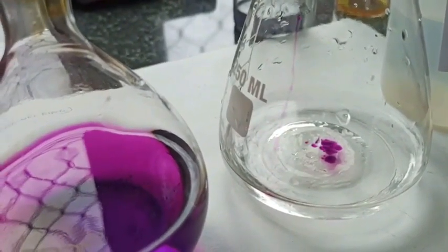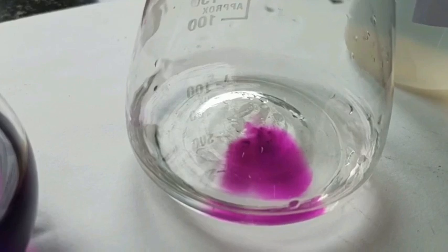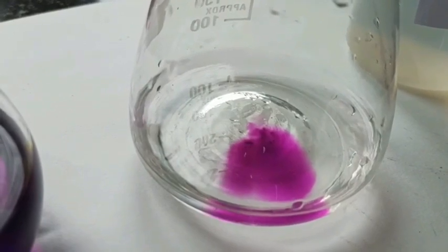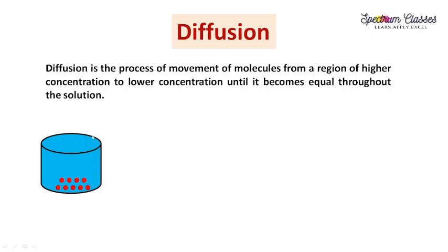After some time we have this kind of situation. Diffusion is the process of movement of molecules from a region of higher concentration. These are my KMnO4 molecules and this blue color represents the water molecules, so they start moving from high concentration to low concentration — or we can say there is a concentration gradient.